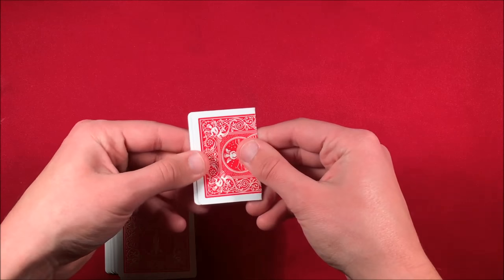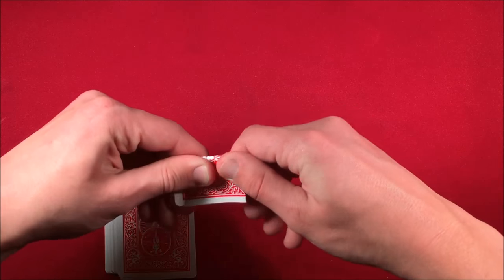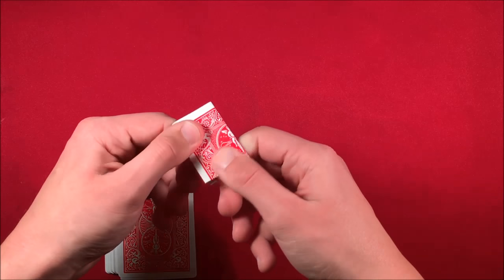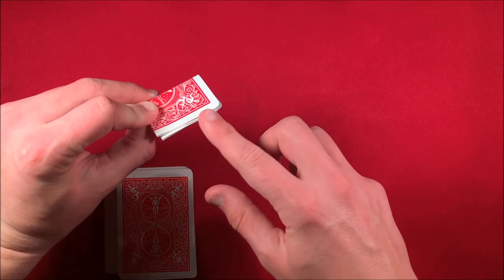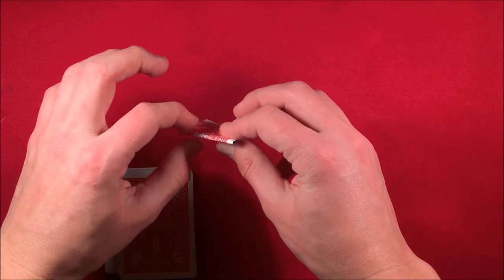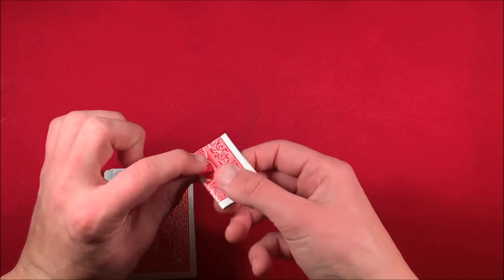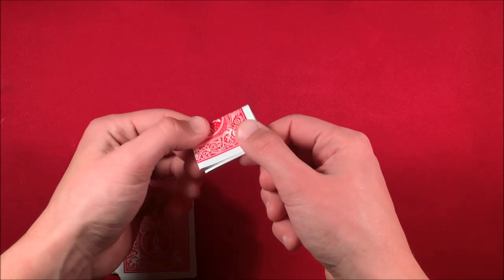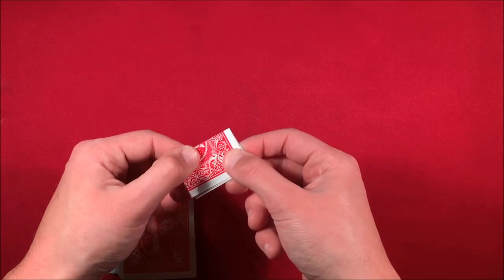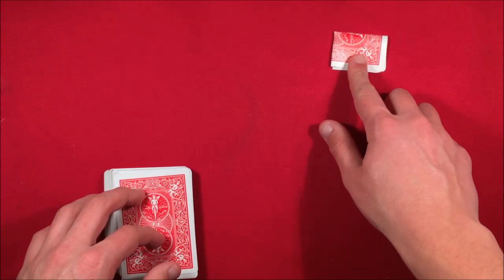So you fold it up and you have the spectator bite the card where these flaps are. You don't have them bite where the crease is because if they bite here then these little flaps can open up and you might flash the card. So make sure that they're biting the card right around here with the flaps.